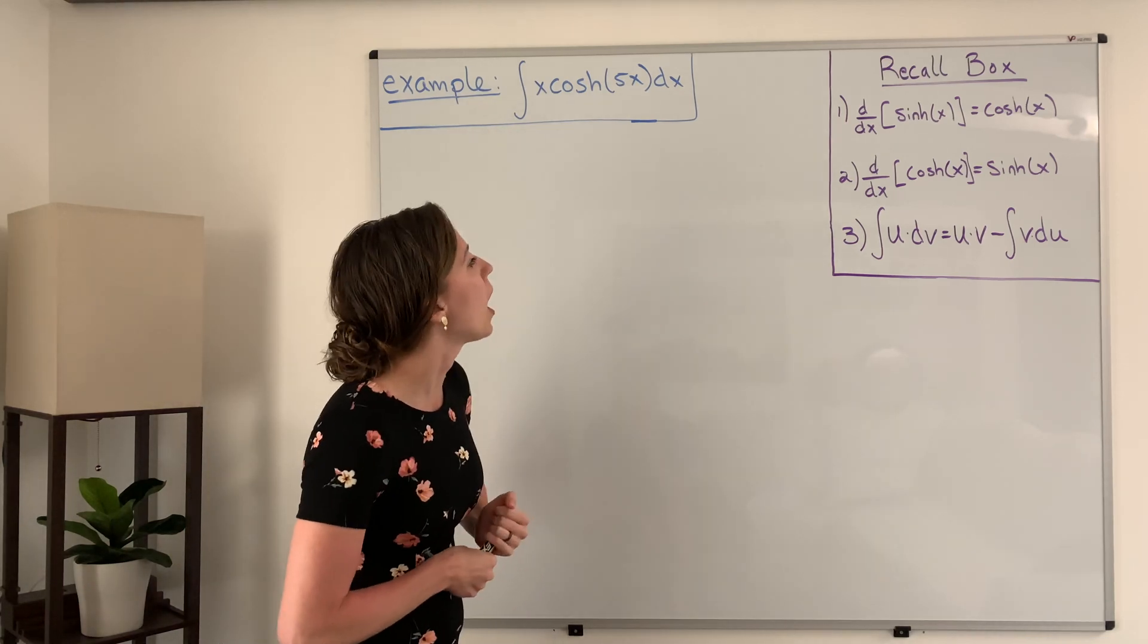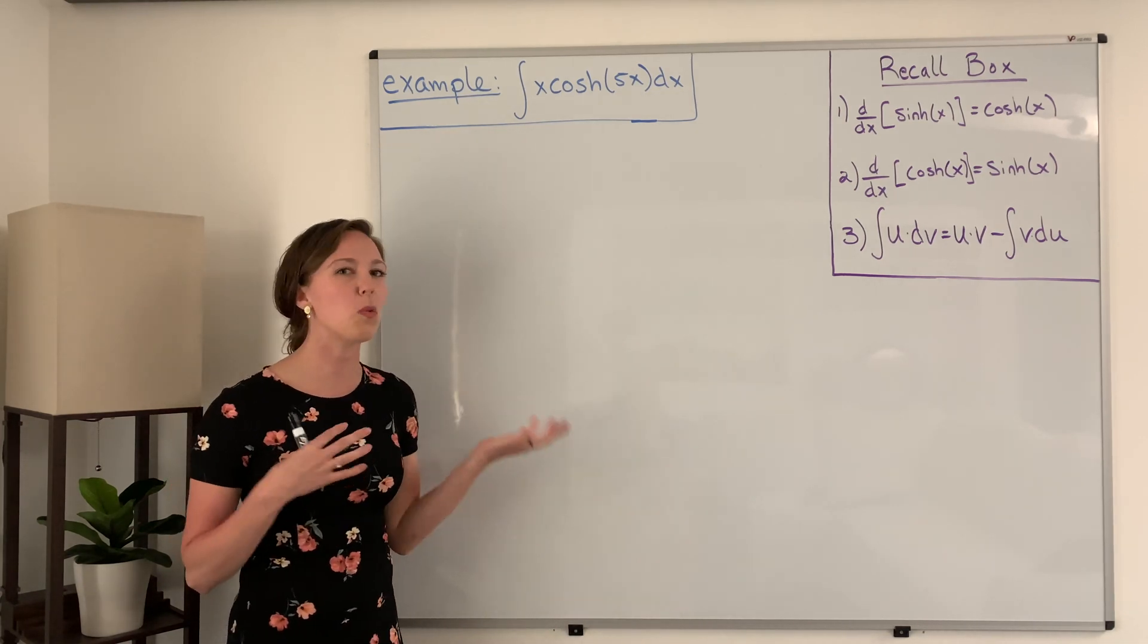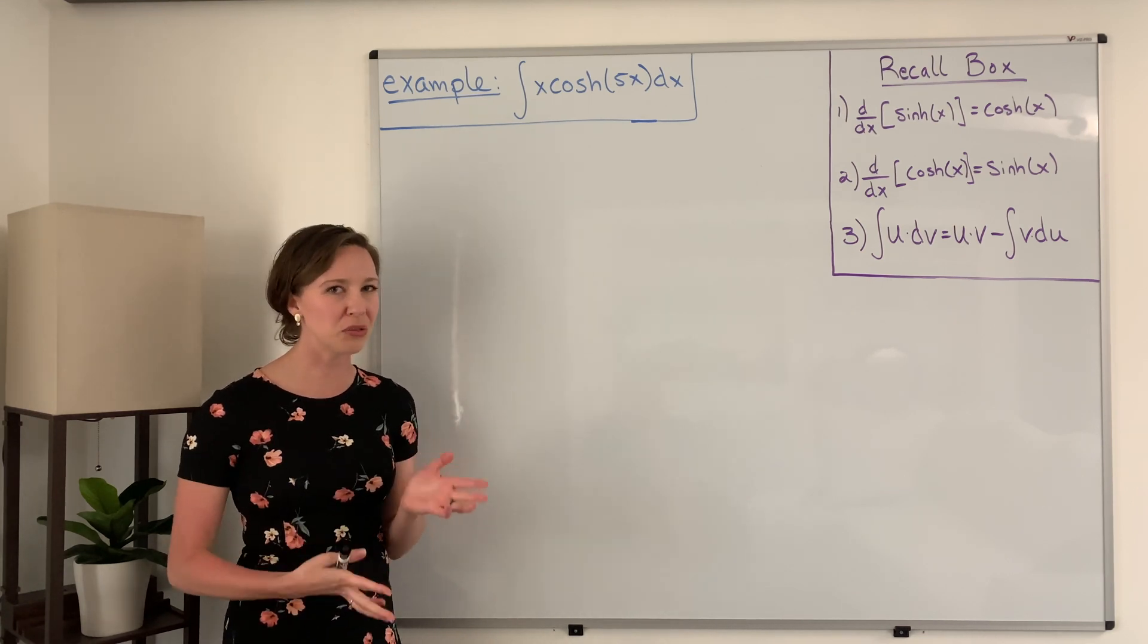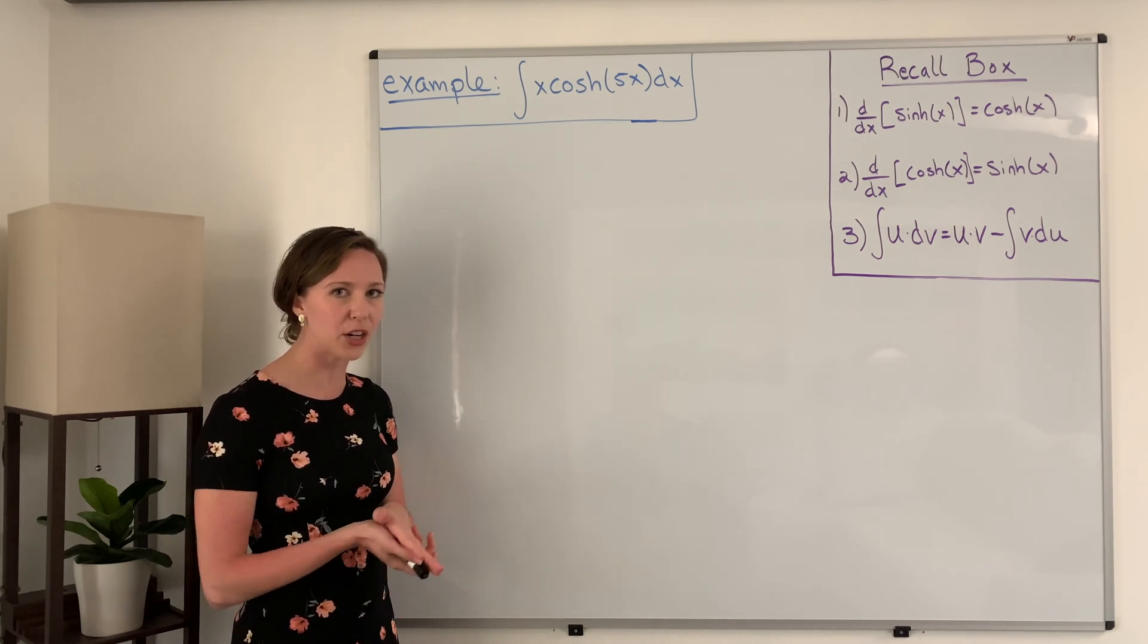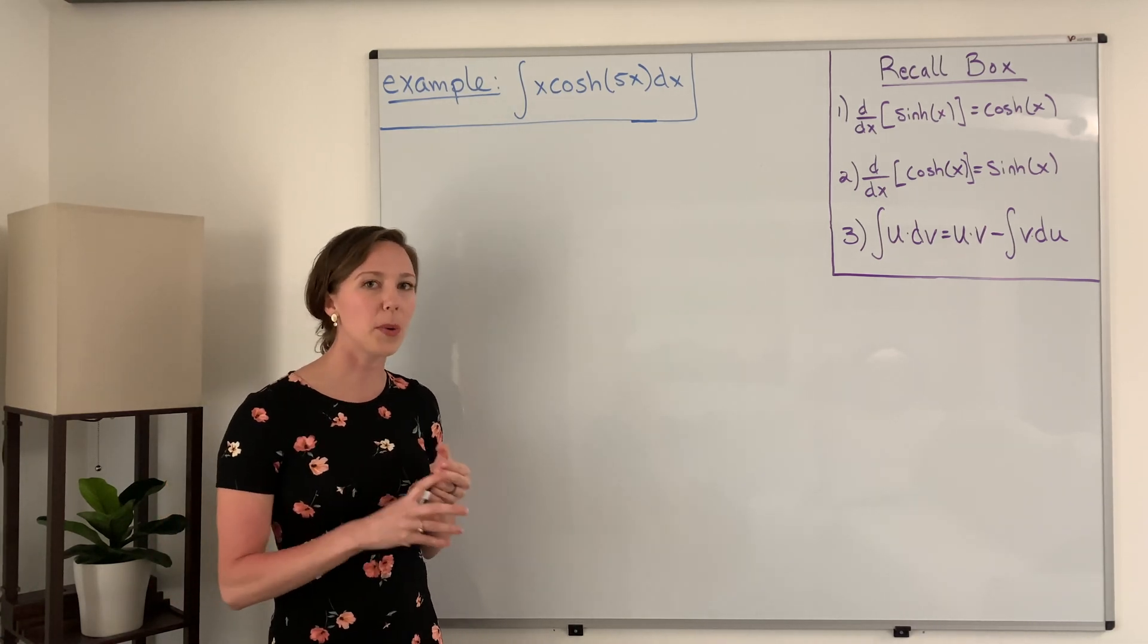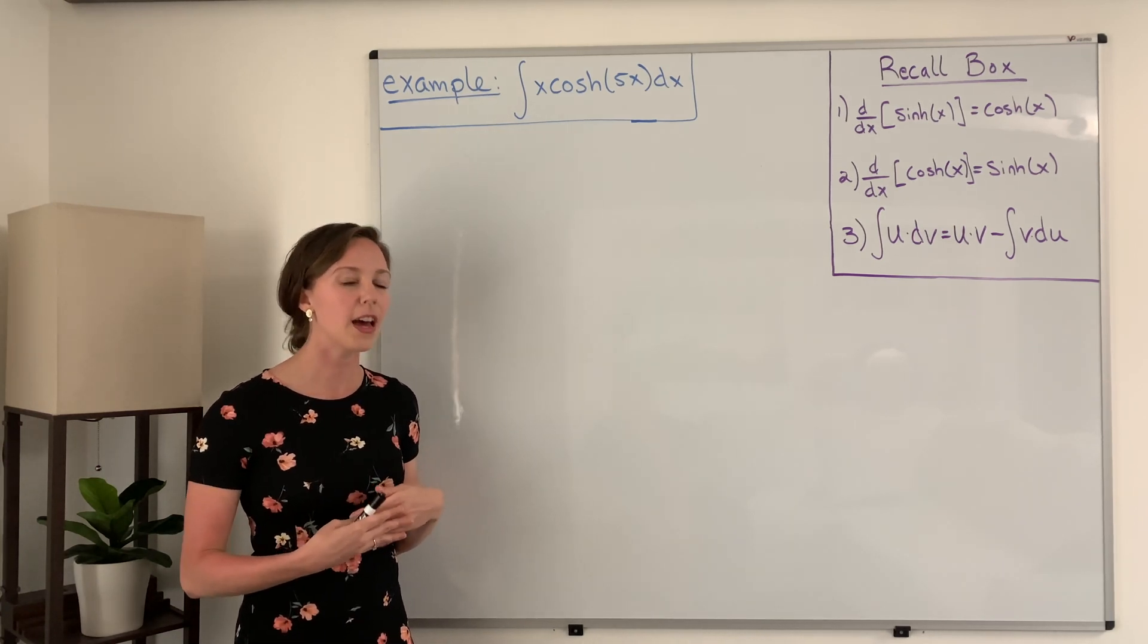The second question you should ask yourself is how do I know what to pick for my u and my dv? Now on certain problems this might not matter, but on this one a general rule is that we'll pick for our u the part of the function that if we keep taking the derivative eventually we'll get zero. This will make it easier to solve.